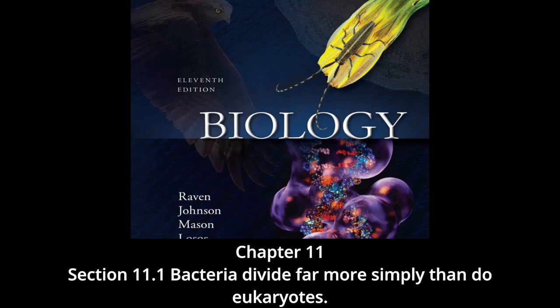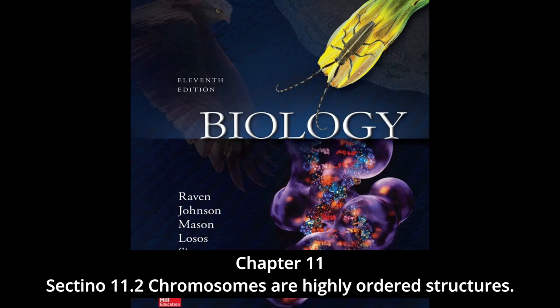The evolution of eukaryotes introduced several additional factors into the process of cell division. Eukaryotic cells are much larger than bacteria and their genomes contain much more DNA. Eukaryotic DNA is contained in a number of linear chromosomes whose organization is much more complex than that of the single circular DNA molecules in bacteria. In chromosomes, DNA forms a complex with packaging proteins called histones and is wound into tightly condensed coils. Synopsis: bacteria divide by binary fission; an active partitioning process ensures that one genome ends up in each daughter cell.